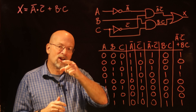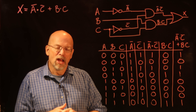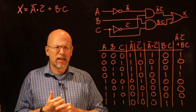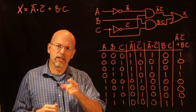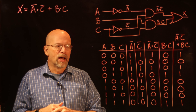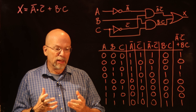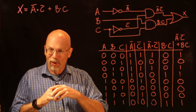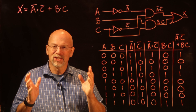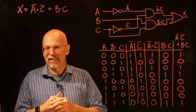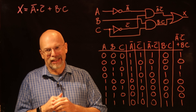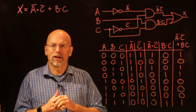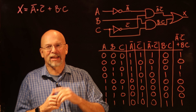In our next lesson, we're going to be talking about a special type of gate — a special type of operation called a decoder. What it looks for is when is the one case when all of these things are true? Sounds like an AND gate — it is an AND gate, but a special kind. We'll talk about that in the next lesson.